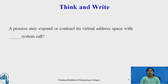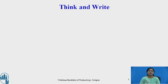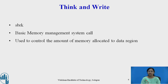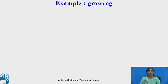A process may expand or contract its virtual address space using the SBRK system call. As already mentioned, SBRK is the basic memory management system call — it is used to control the amount of memory allocated to the data region. So a process expands and contracts its virtual address space using SBRK, and this is how the grow region algorithm is invoked.